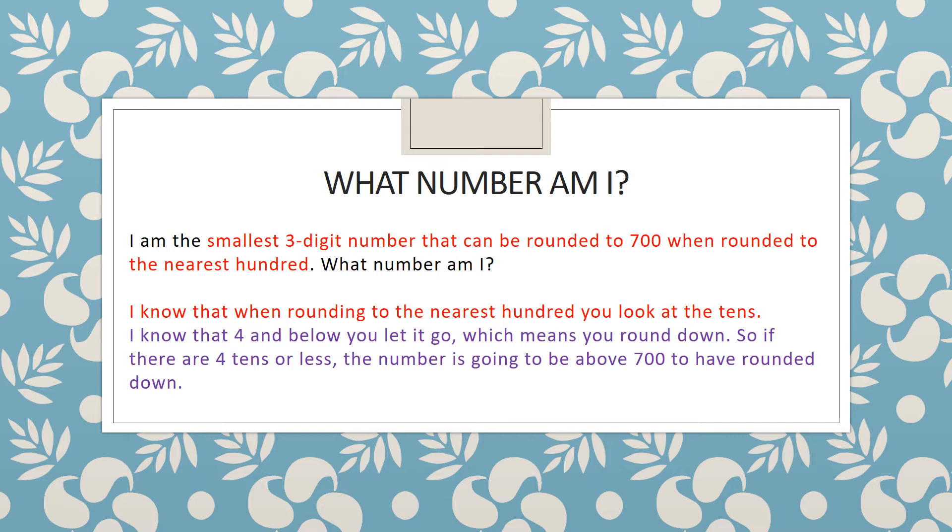So I've started off by thinking I know that when rounding to the nearest hundred you look at the tens, and going back to the rhyme I know that four and below you let it go which means you round down.